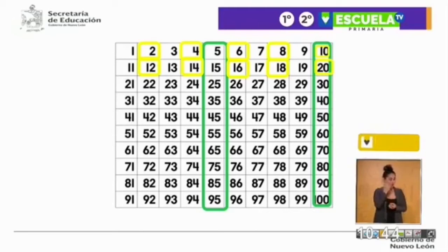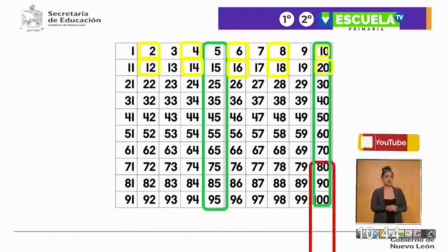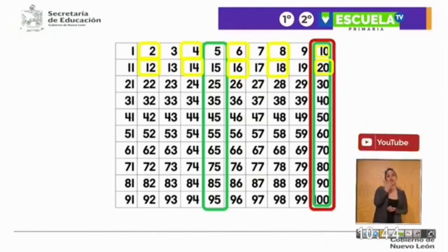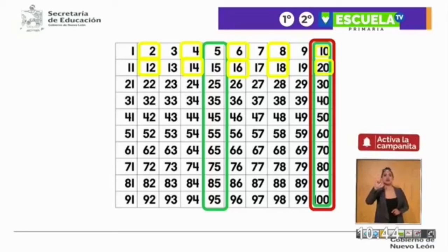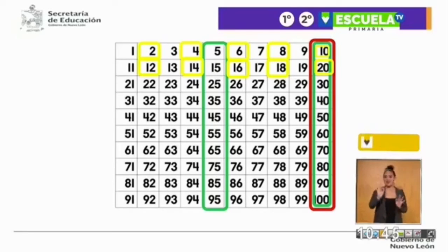Empezamos, Rosita, de 10 en 10: 10, 20, 30, 40, 50, 60, 70, 80, 90, y 100. Terminamos. Muy bien. Eso vamos contando de 10 en 10 y lo encerramos con rojo.